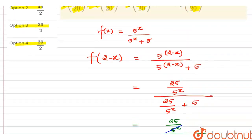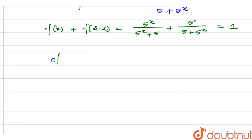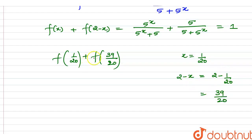From this, we can identify pairs in the series. We have f(1/20) paired with f(39/20). If we take x = 1/20, then 2 − x = 2 − 1/20 = 40/20 − 1/20 = 39/20. So f(1/20) + f(39/20) = 1. This pair sums to 1.